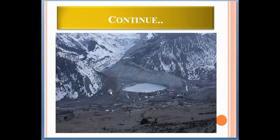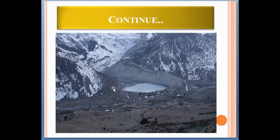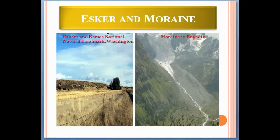Eskers mark the route of a river or stream that flowed millions of years back below the glacier, whereas a moraine is debris and regolith that is deposited by the moving glacier.